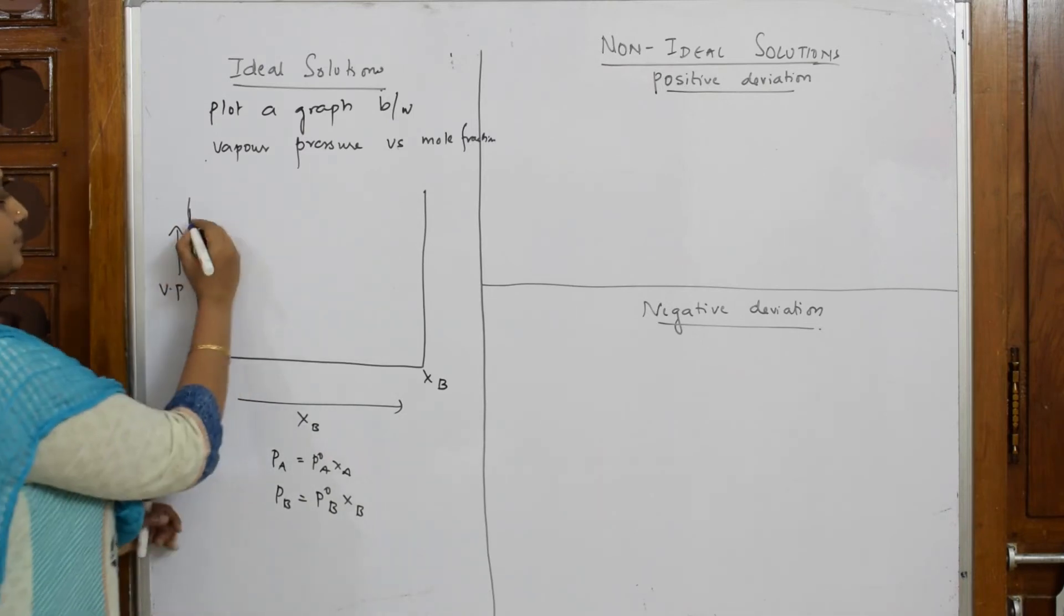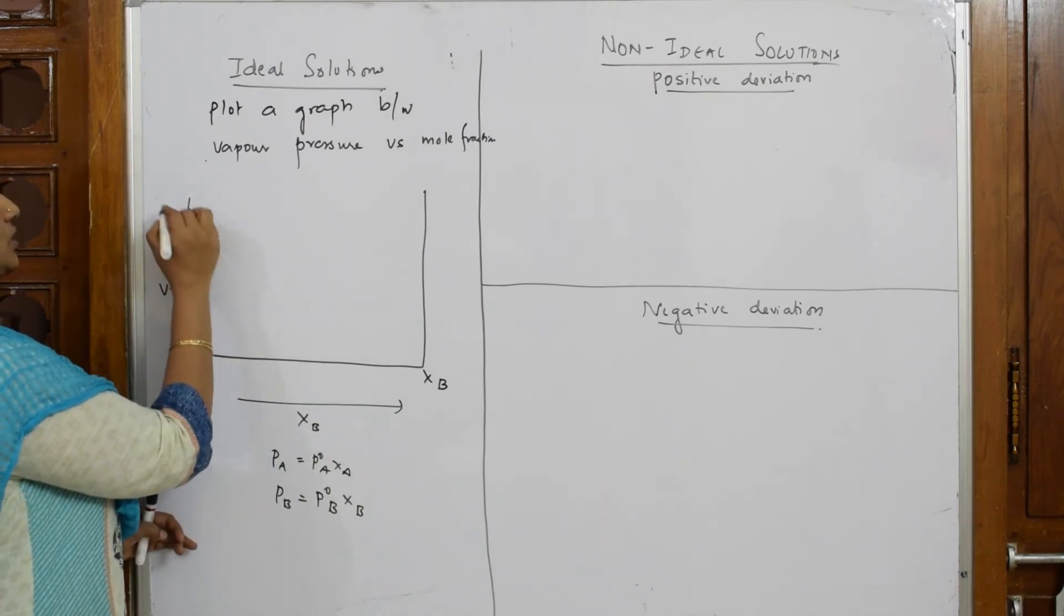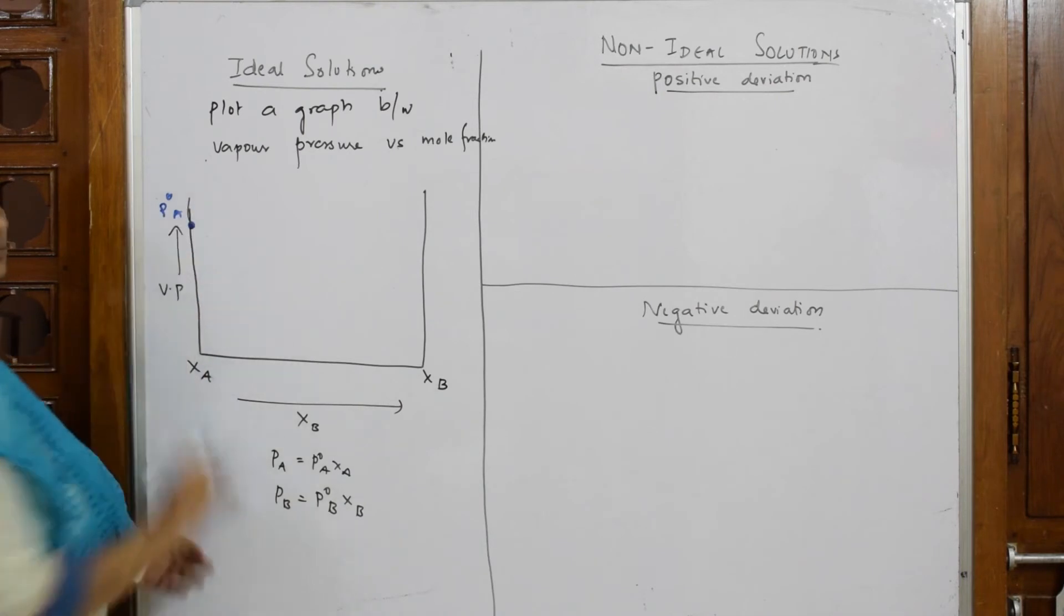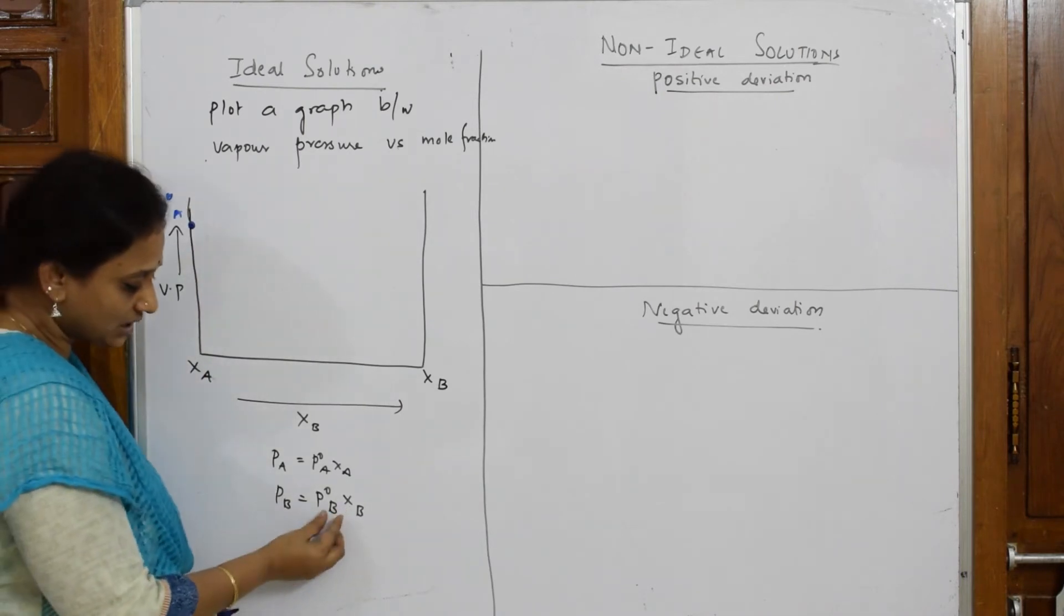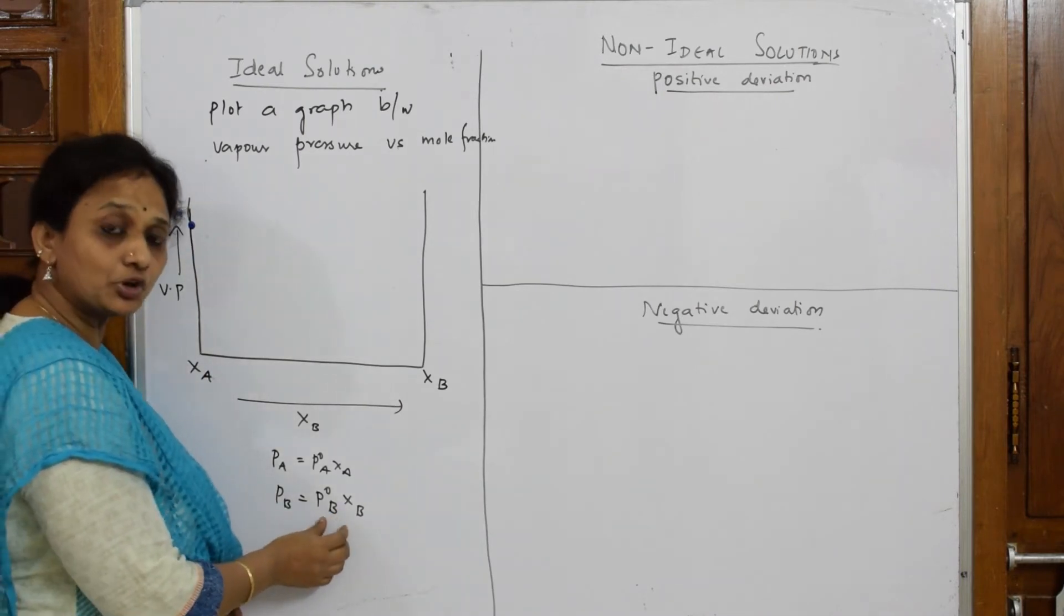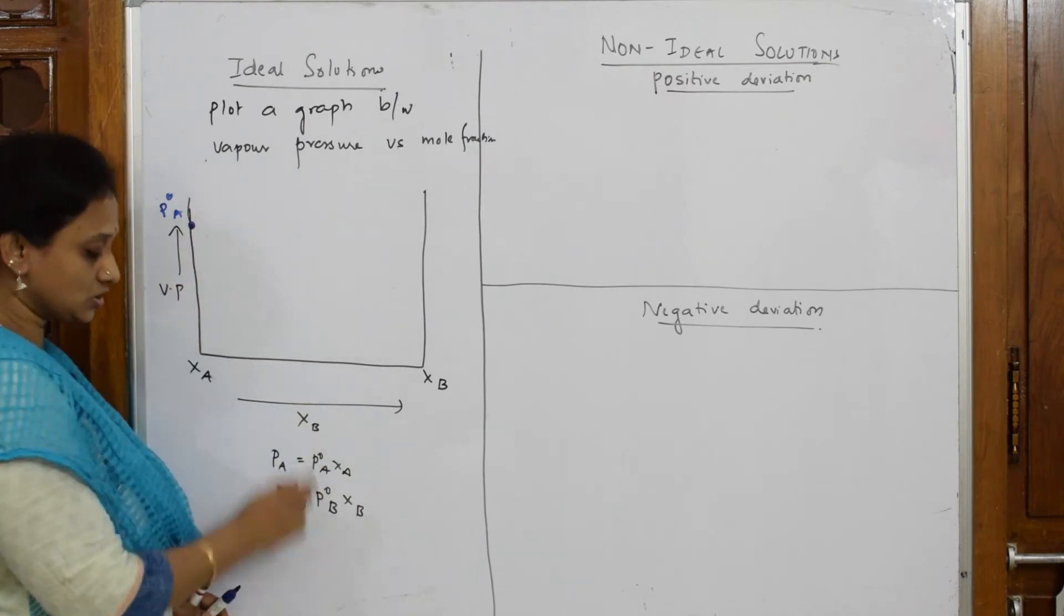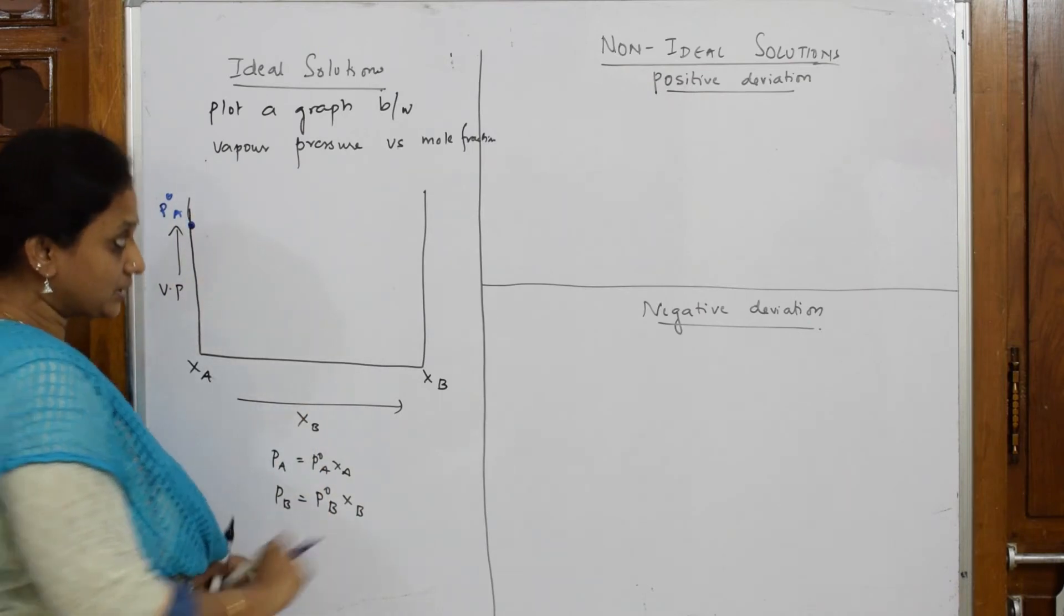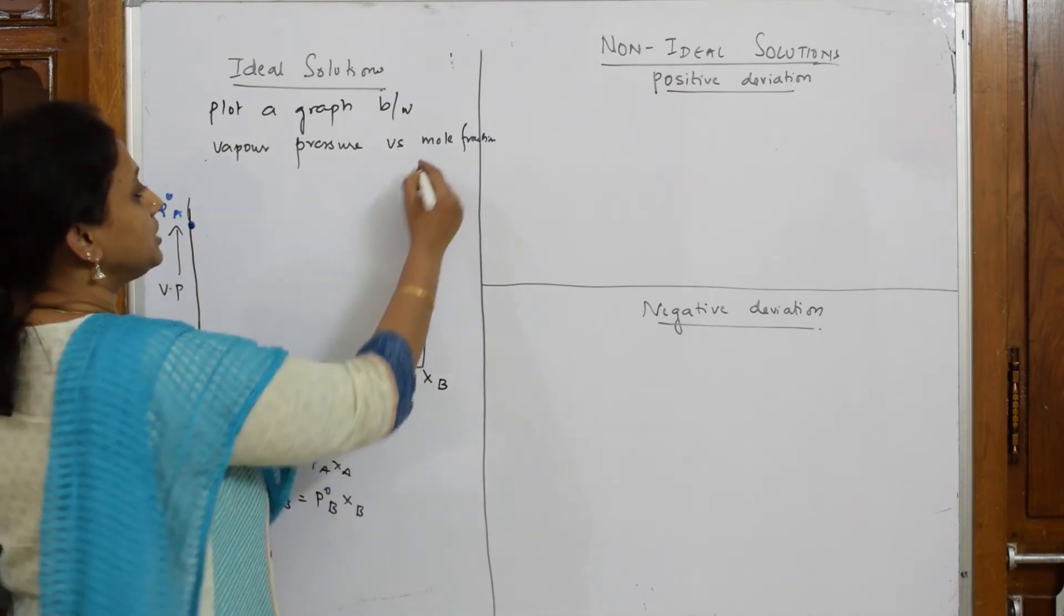For component XB, the vapor pressure exerted by the pure solvent, this is also pure solvent, this is also pure solvent. Vapor pressure exerted by component B is P naught B.